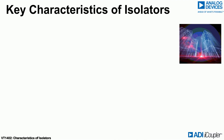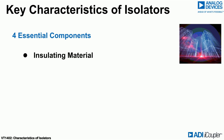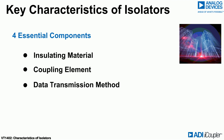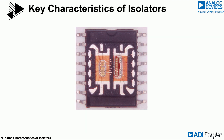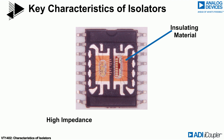There are four essential components of an isolator device: the insulating material, the coupling element, the data transmission method, and the packaging. The insulating material provides the high impedance necessary to limit current flow, which is the primary function of an isolator.